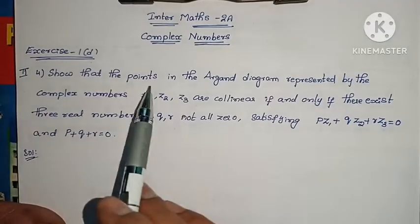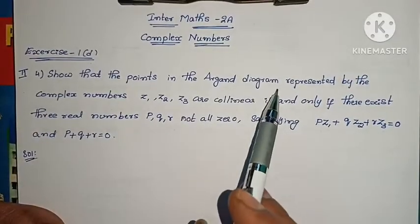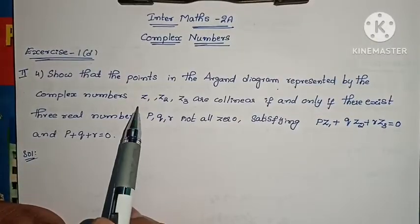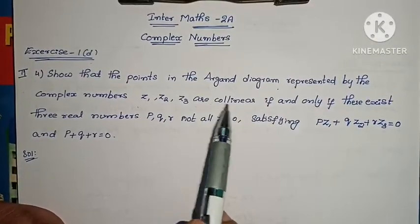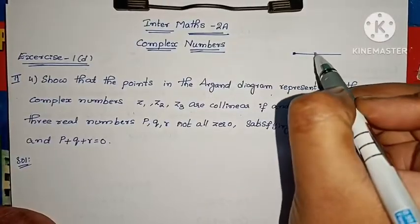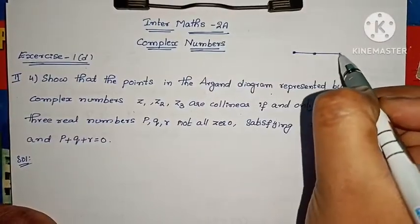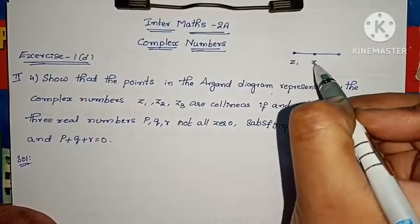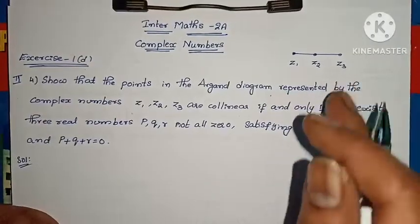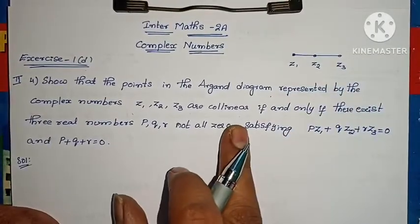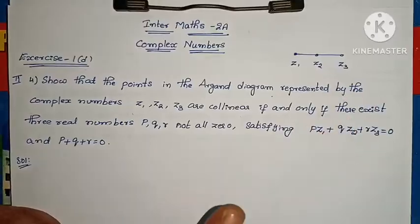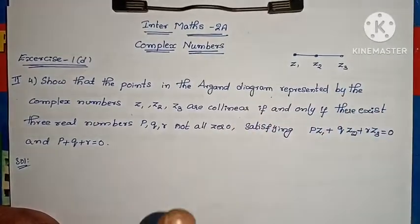The question: show that the points in the Argand diagram represented by the complex numbers Z1, Z2, Z3 are collinear. Collinear means the points lie on the same straight line. Z1, Z2, Z3 lie on the same straight line — they are called collinear points. These are the 3 collinear points.